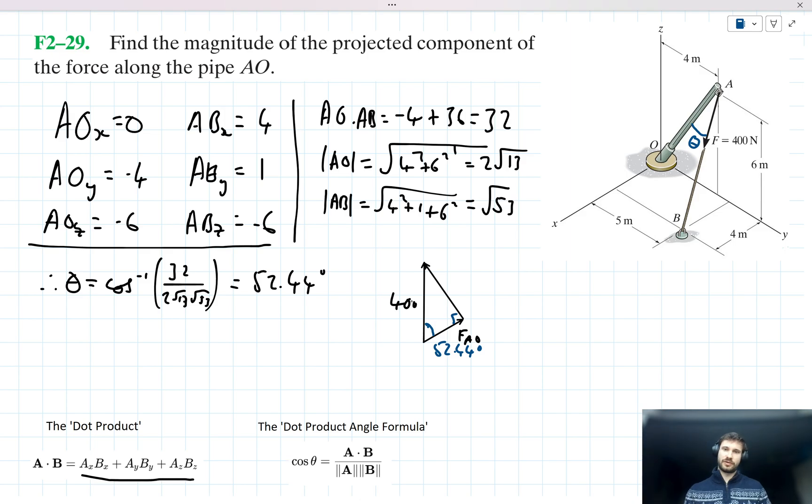So evidently, we can solve for FAO using trigonometry here. We have our hypotenuse, it's 400. We're looking for our adjacent, it's FAO. We have the hypotenuse, we're looking for the adjacent. It might make sense then to use cos, since the cos of an angle is equal to the adjacent over the hypotenuse. So we can say, therefore, the cos of 52.44 here is equal to FAO over 400. Therefore, FAO multiplying both sides by 400 here is going to be equal to 400 cos 52.44. Which, when we put in our calculator, gives us a value of 243.8. And let's just add newtons in there just to be clear it's a force.